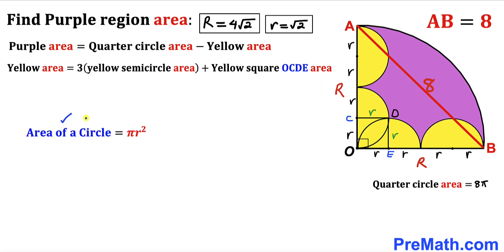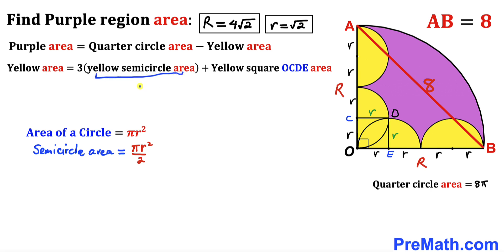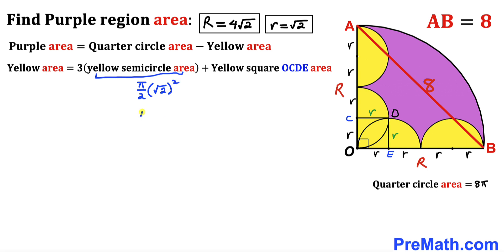Recalling the circle area formula A = πr², the area of a semicircle is πr²/2. With lowercase r = √2, the yellow semicircle area is π/2 × (√2)² = π/2 × 2 = π. So each yellow semicircle has area π.